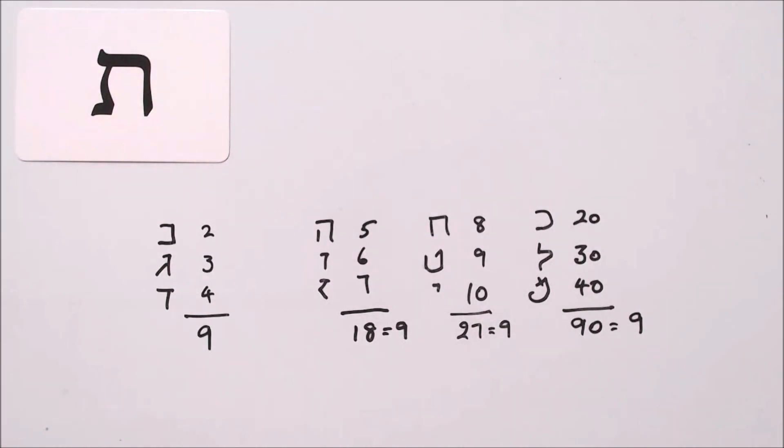And we could proceed right through the alephbate in this way, but we haven't got time to do it here. But if you want to do it yourself, carry on through and you'll find that there's always a digit sum of nine.